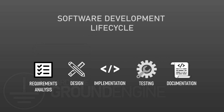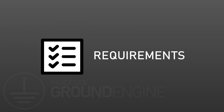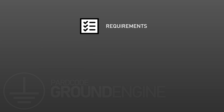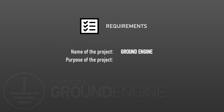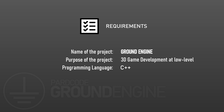Now that we generally know how a software development life cycle works, let's apply it to the development of our game engine. Let's start with the requirements. To better identify our project, let's give it a name. It's a game engine that will be built from the ground up, so we can call it Ground Engine. The purpose of the project: Ground Engine would be a game engine for the development of 3D games at low level. Programming language: C++. The target platforms: Windows initially, Mac OS and Linux later.